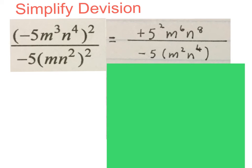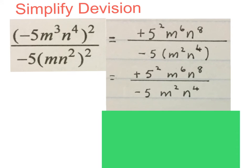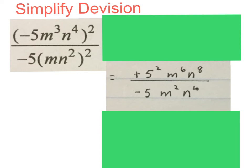Now the top is simplified. We simplify the bottom fully — just get rid of the brackets by multiplying minus 5 into the bracket, which won't change the values. Now we concentrate on simplifying top against bottom. We cancel the 5's, the m's, the n's, and the signs. Plus divided by minus gives a minus. 5 goes in once each side leaving 5 on top. Cancel the smallest m, leave a placeholder 1 below, and m to the power of 4 remains on top. Cancel the smallest n, put 1 below, and n to the power of 4 remains on top.